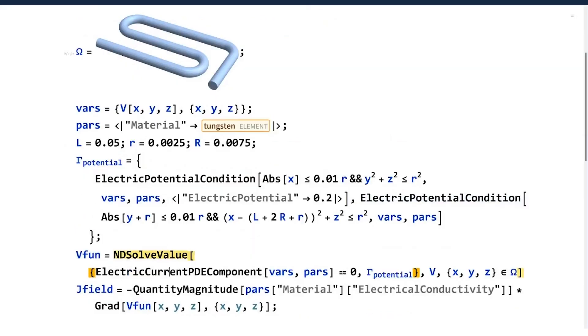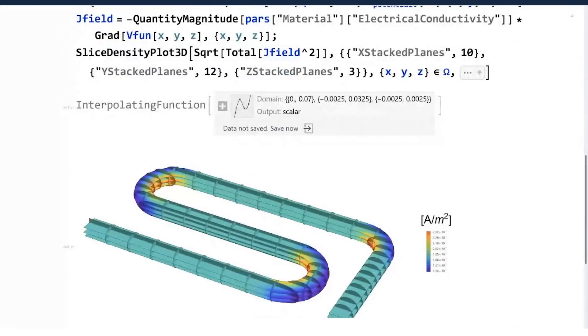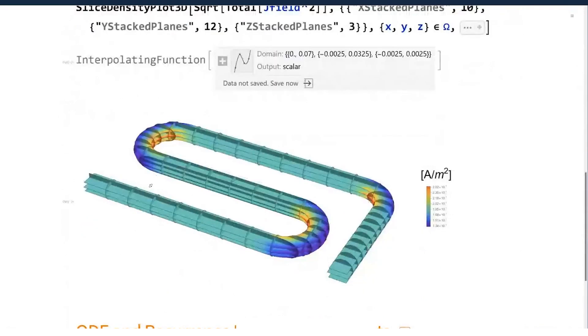The new thing here is electric current PDE component. The idea is that we're modeling electrical currents flowing through materials. I've got some geometry represented using our geometry framework, so that could have been imported from an STL file or from a CAD package. I'm using our entities to say prescribe the materials, say it's tungsten. Some of these things depend on properties like conductivity, and by telling it tungsten it can look up all of those values. Then we set up some boundary conditions, electricity flowing in at one end and out the other, and then we're solving it and visualizing the current density on the thing.